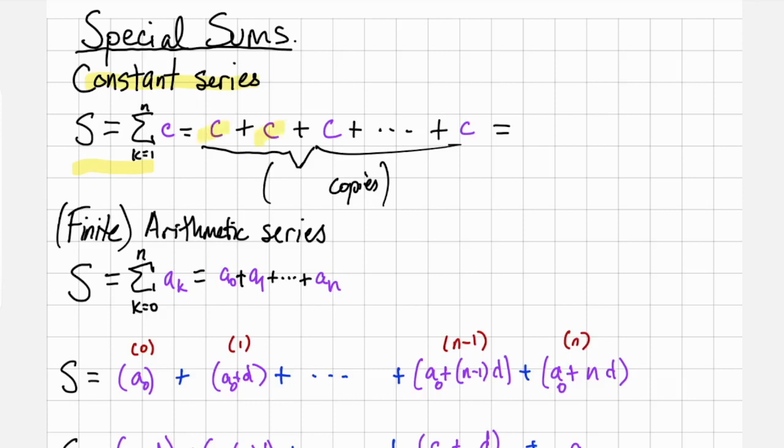What we get is c plus c plus c plus c. There are k copies of this because we start off at 1 and go up to n. k copies of c gives us k times c.